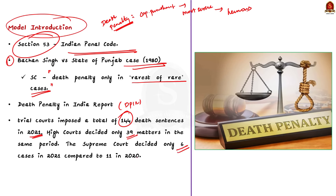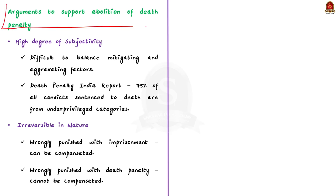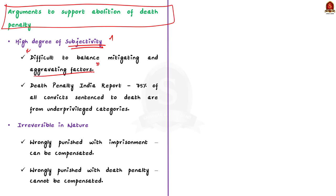By simple logic, less than 5% of death sentences imposed by trial courts were confirmed by the Supreme Court. Moreover, nearly all death penalty convicts are currently undergoing life imprisonment. This shows that capital punishment is fading from the Indian judicial system. In the body part, we list arguments supporting abolition. Firstly, there is a high degree of subjectivity in capital punishment. Judges find it difficult to balance mitigating and aggravating factors. For example, according to the Death Penalty in India report, approximately 75% of all convicted are from underprivileged categories.